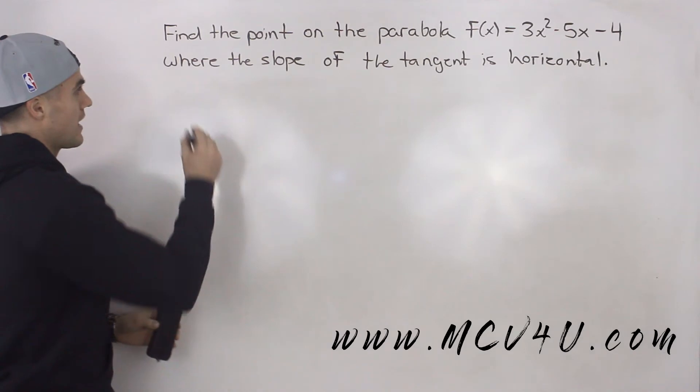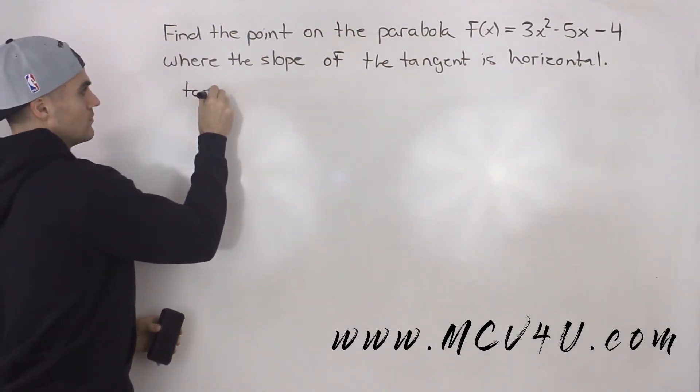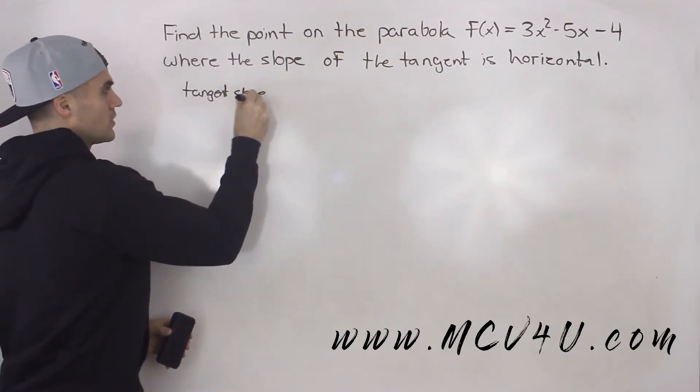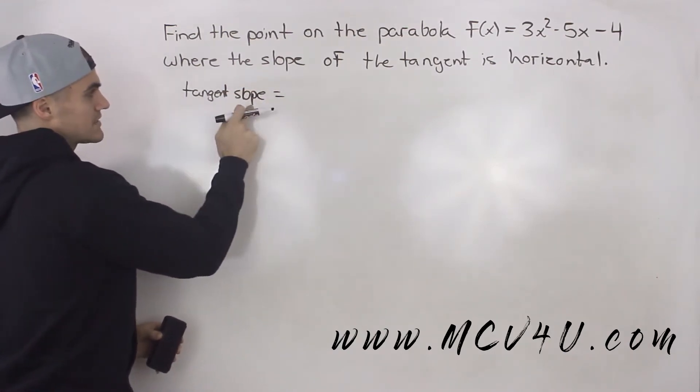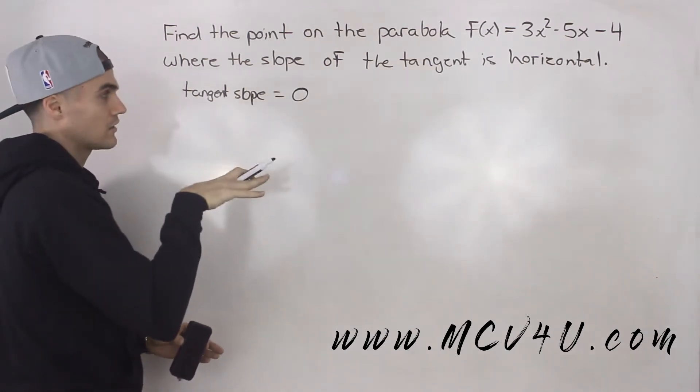So if a tangent slope is horizontal, what does that mean? It means that the tangent slope is equal to 0, because the slope of a horizontal line is 0.